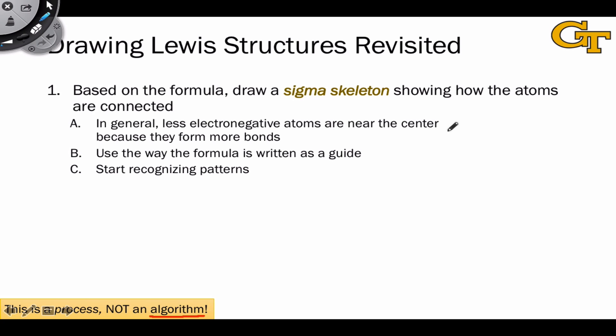which involves drawing what we call a sigma skeleton. The sigma skeleton shows how the atoms are connected to each other through sigma bonds. The sigma skeleton consumes or uses up the sigma electrons in the molecule. The question of what makes a reasonable sigma skeleton is actually a really good question, and there are a few general rules that we can use to think about this.